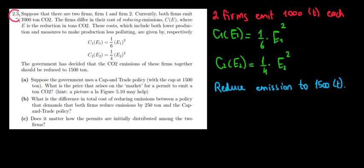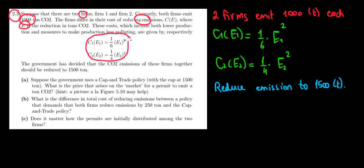Let's start working on question 2.3. Suppose there are two firms and they both emit a thousand tons of CO2 — so each of them emits a thousand tons. The firms differ in the cost of reducing emissions, shown by the variable E, and the cost of reducing emissions is a function of E. The government has decided that total CO2 emissions should be reduced to 1500 tons.